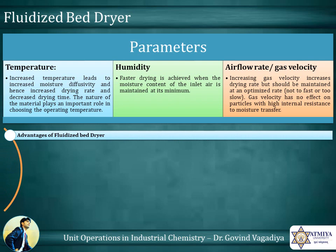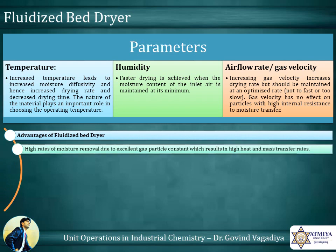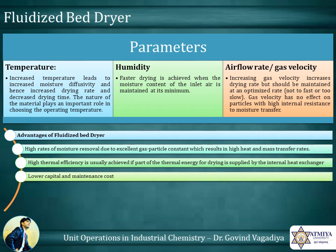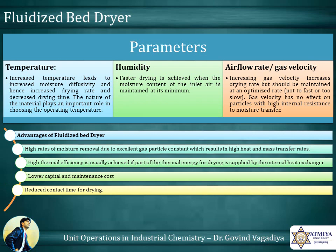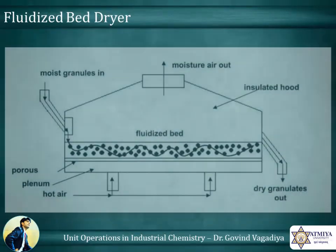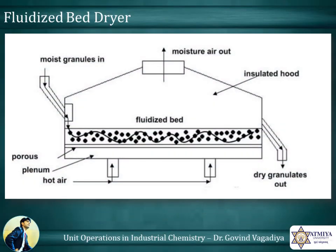Advantages of the fluidized bed dryer: high rates of moisture removal due to excellent gas-particle contact, which results in high heat and mass transfer rates. High thermal efficiency is usually achieved if part of the thermal energy for drying is supplied by the internal heat exchanger. Lower capital and maintenance cost. Reduced contact time for drying. Ease of control. In the diagram of the fluidized bed dryer, one can observe that air flow is given from the bottom of the fluidized bed, so material dries rapidly with higher efficiency.